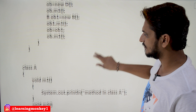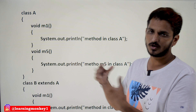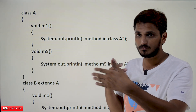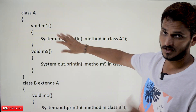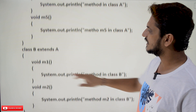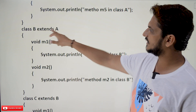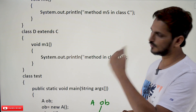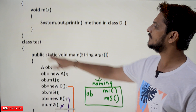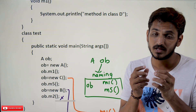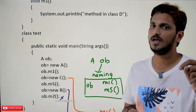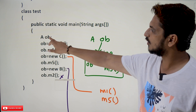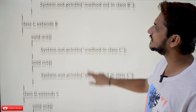Now let's go deeper with the next example. Class A has M1 and M5 methods. Class B extends A and has M1 and M2 methods. Class C extends B and has M1 and M5 methods. Class D extends C and has M1 method. In the test class, when we create a reference variable A OB, it is going to store the naming — the methods available in class A, which are M1 and M5.